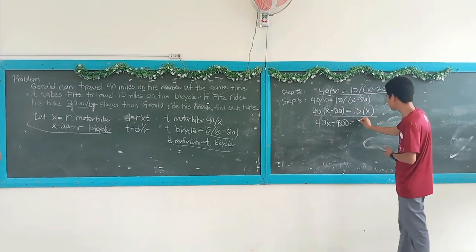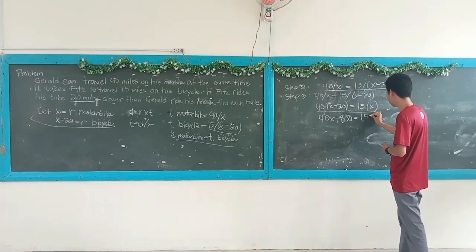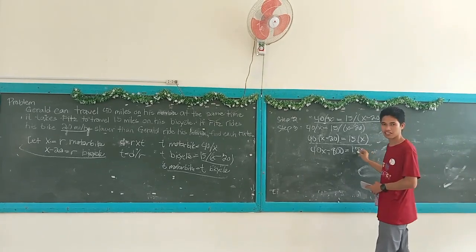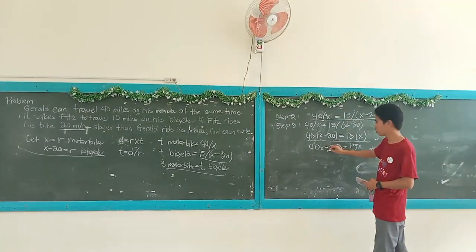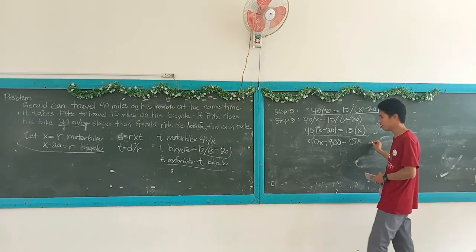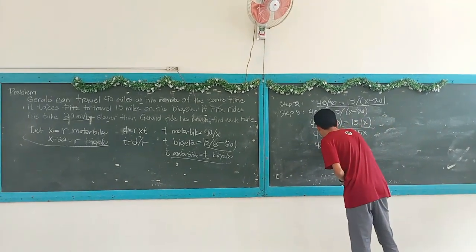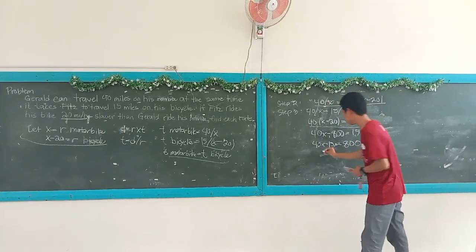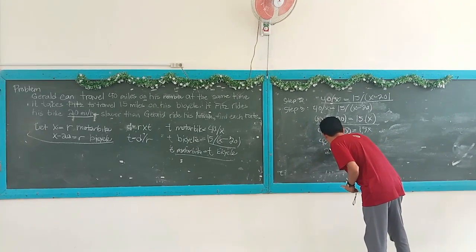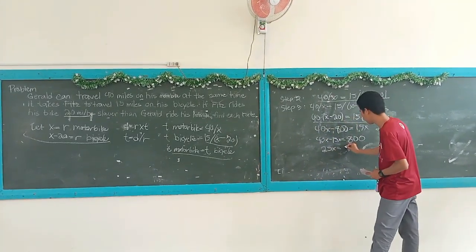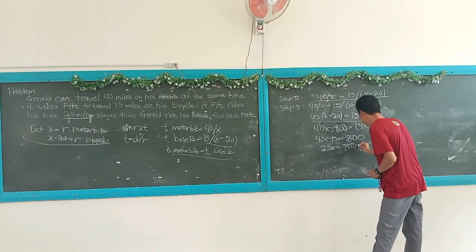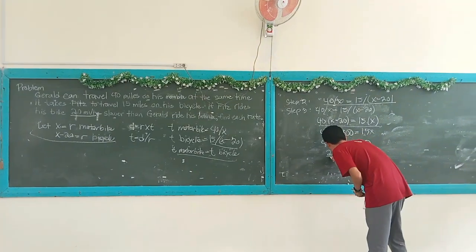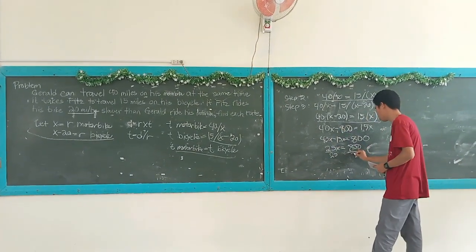Expanding: 40 times x is equal to 40x, and 40 times 20 is equal to 800, giving us 40x minus 800 equals 15x. We then transfer 15x to the left side, giving us 40x minus 15x is equal to 800, so 25x is equal to 800. To solve for x, we divide both sides by 25, giving us x equals 32.